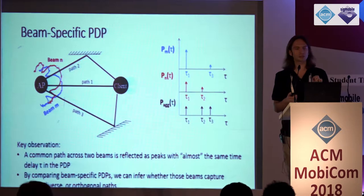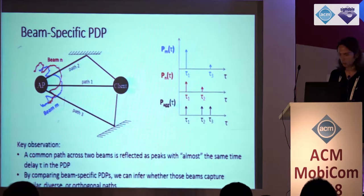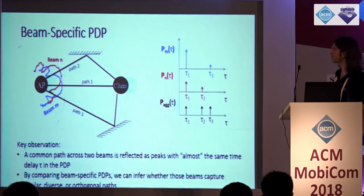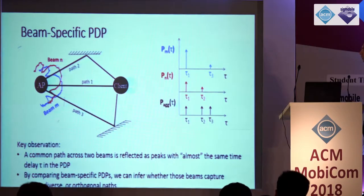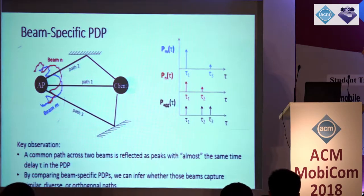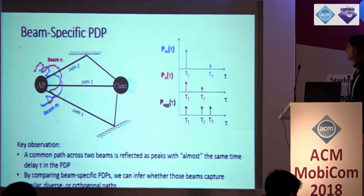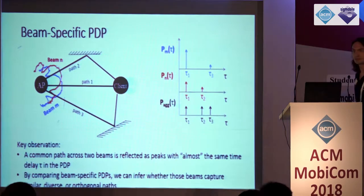Let me show a toy example. In this case, we have three dominant paths: one line-of-sight path and two reflected paths. The blue beam, beam M, captures two paths — one and three — but does not capture path two, because path two falls in a null for that beam. Similarly, the red beam captures paths two and one, but does not capture path three.